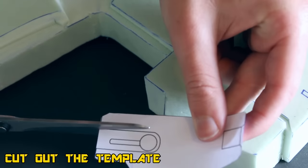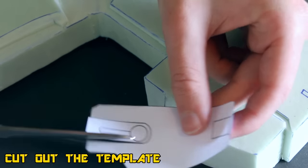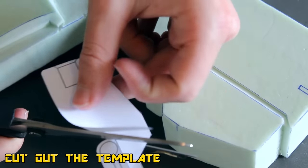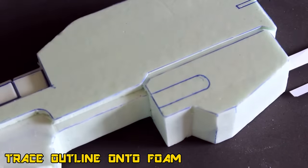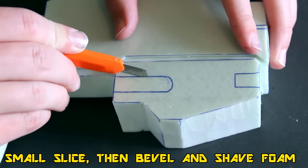Now that you know how to do that, we're going to add some more detail to the lower section of the prop down near the little laser light. Go ahead and cut out the little segment that I just showed you and then trace it onto the foam.